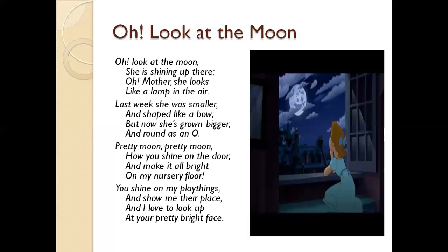So this is all about the poem. The poet is explaining how she looked at the moon and how she finds the moon pretty. Now let us read the poem once more. 'Oh look at the moon, she is shining up there. Oh mother, she looks like a lamp in the air. Last week she was smaller and shaped like a bow, but now she is grown bigger and round as an O. Pretty moon, pretty moon, how you shine on the door and make it all bright on my nursery floor. You shine on my playthings and show me their place and I love to look up at your pretty bright face.'